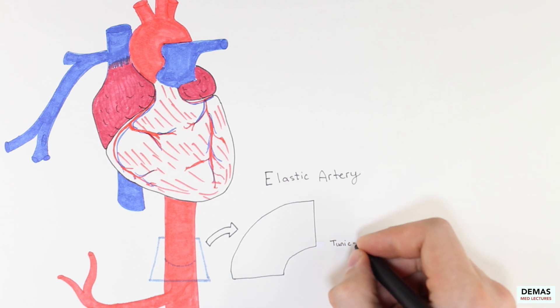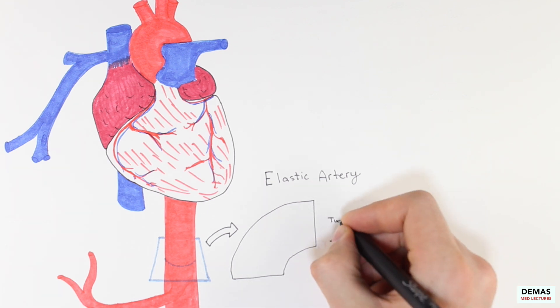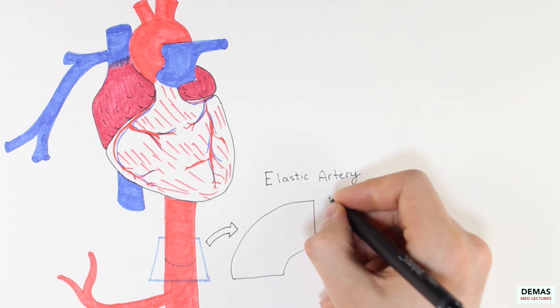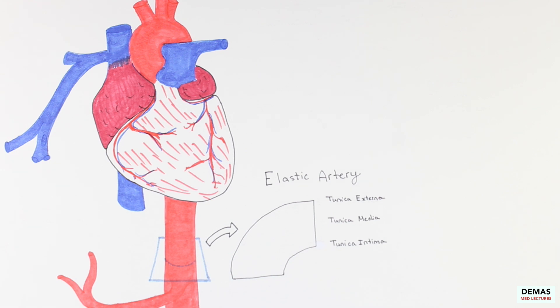All of the body's vasculature, with the exception of capillaries, have three layers, and these are the tunica interna, or tunica intima, tunica media, and tunica externa.